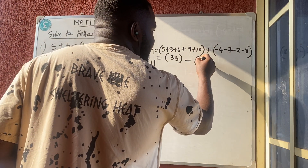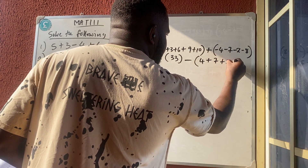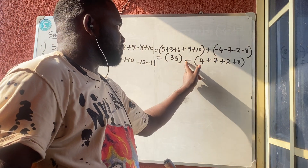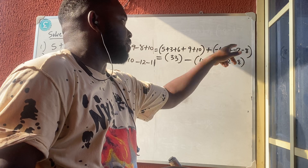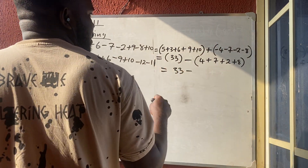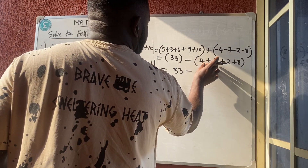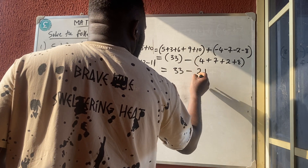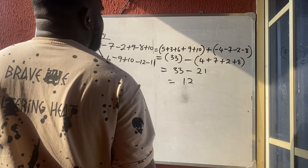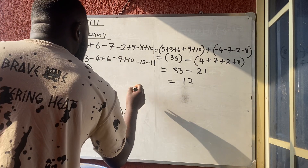Since we factored out minus, everything inside becomes positive: four plus seven plus two plus eight. Adding these: ten plus eleven is twenty-one. So we have 33 minus 21, which gives us 12. That's the answer — as simple as that.